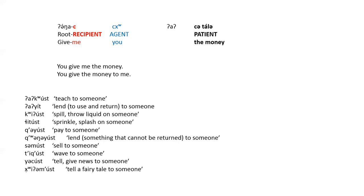Note that most of these words end in '-boost.' This is a suffix that makes a recipient verb from another verb. For example, 'quite' means 'spill' or 'capsize,' and when '-ust' is added it becomes 'quit-boost,' as in 'quit-boost then I spilled on you' — note that 'you' here is the recipient. Also, all these verbs with '-ust' have roots used elsewhere: 'huyam-boost' is related to 'huyam' meaning story or fairy tale, and 'yet-soost' is related to 'see-some' meaning news.